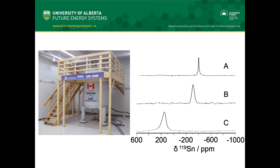By analyzing our NMR spectra, we can create fingerprints that relate to each specific structure and their unique properties. Using these fingerprints, we get a foundation on what structure provides the best solar energy properties.